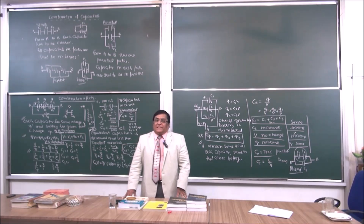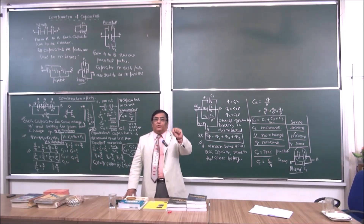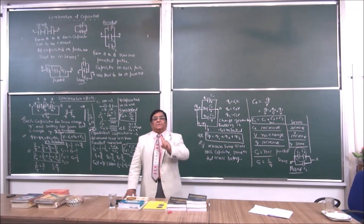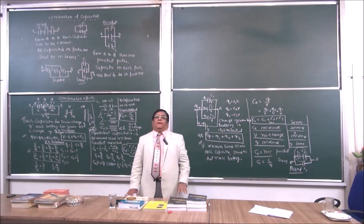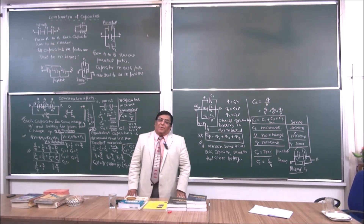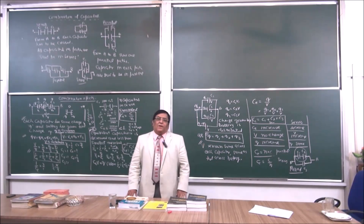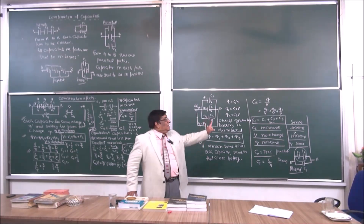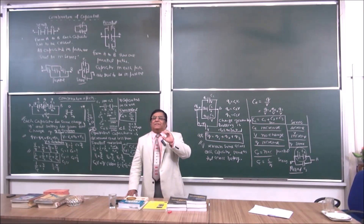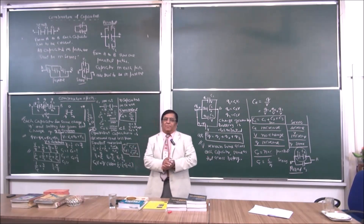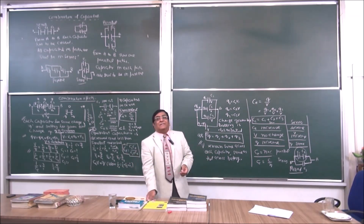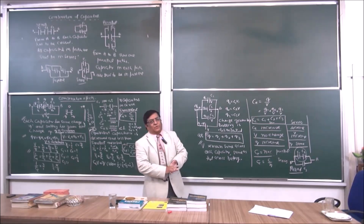In parallel, joining N capacitors gives N times the charge (N×Q); in series only 1Q of charge but N times the voltage. The energy from both combinations will be equal. In the next class, we will study mixed combination and do numericals on mixed combination.